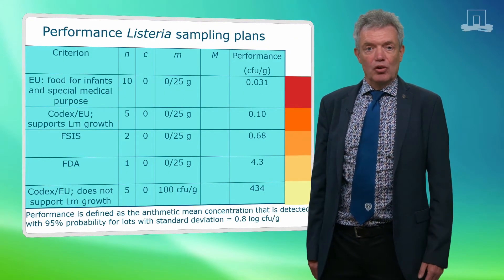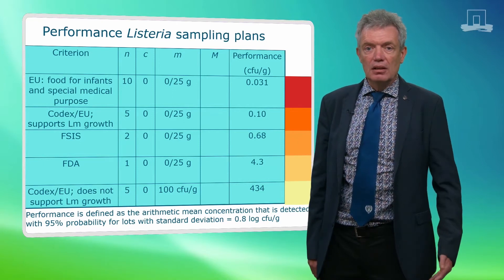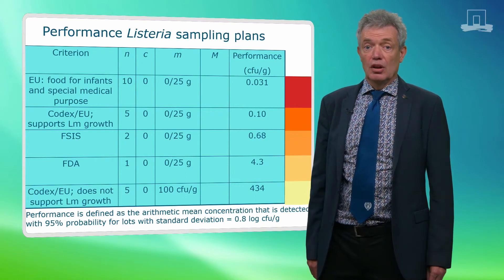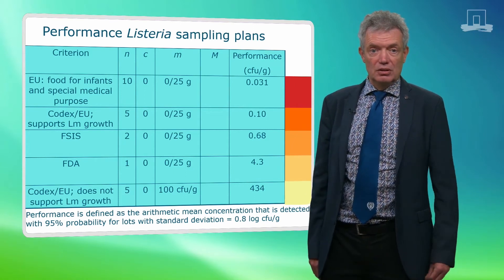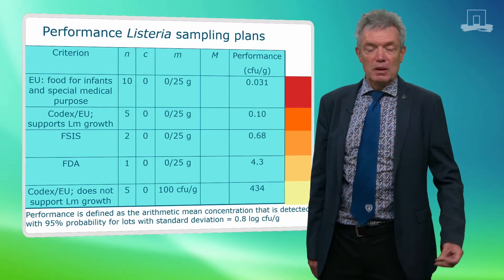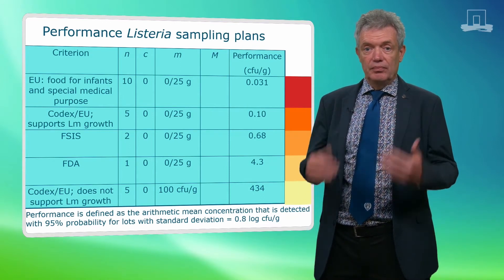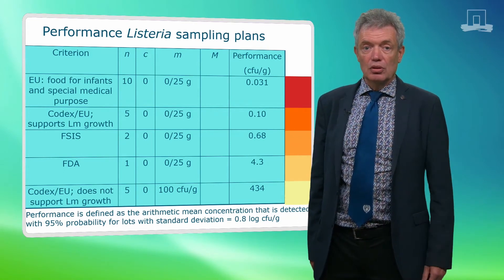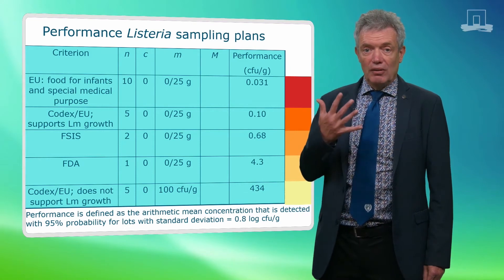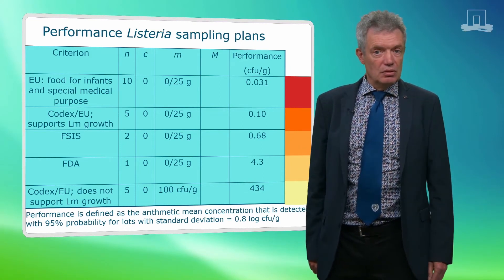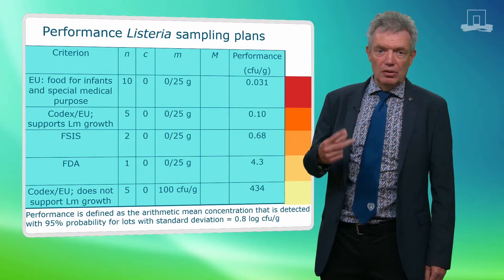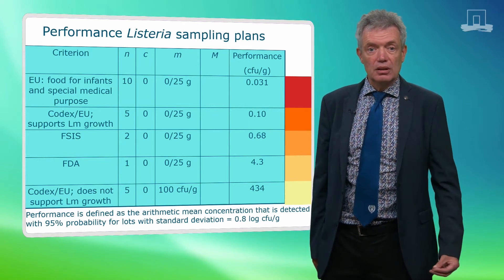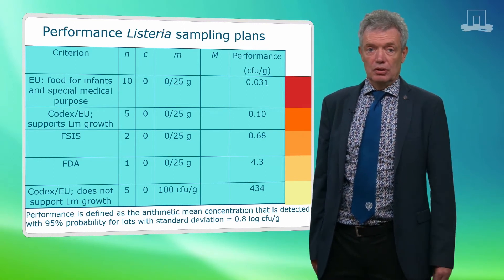We could look at the performance of different Listeria plans, and you see here several in this table, expressed as the arithmetic mean concentration. The first is the most stringent, the EU criterion for foods for infants and for special medical purpose, with n equals 10. Then the Codex and EU criterion for foods that do support the growth of Listeria, with n equals 5. In the US zero tolerance is strived for, but often only one or two samples are taken. Then the last one is the most lenient criterion, the Codex and EU criterion for foods that do not support the growth of Listeria.